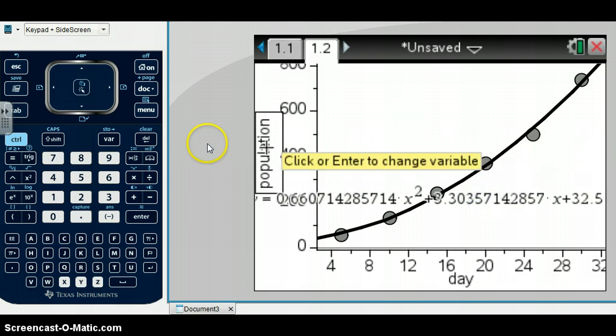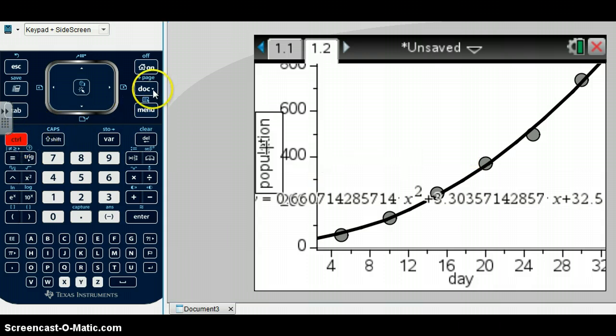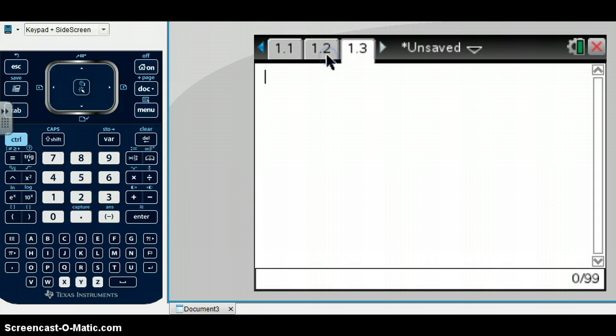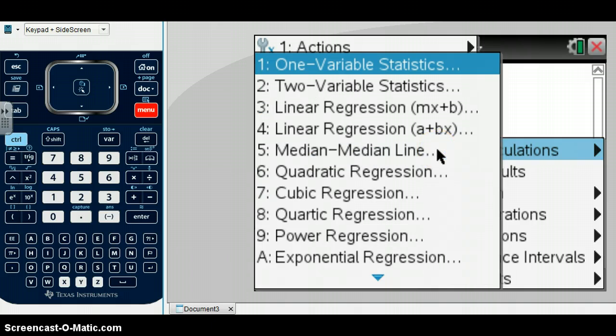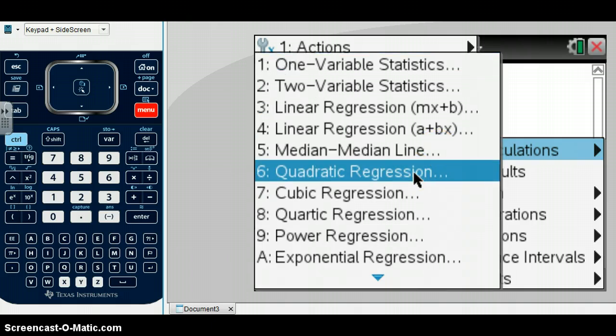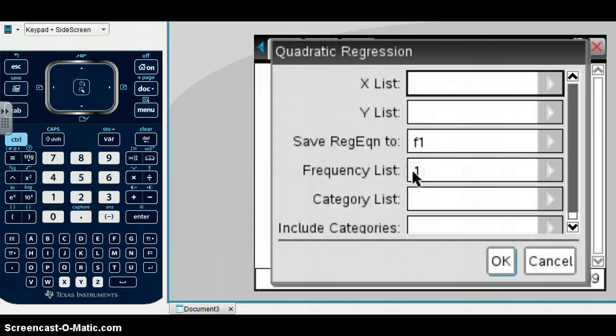One other way that we could get this is insert another new page, which would be a calculator page. And you can go over here to Menu, go to Statistics, Stat Calculations, and you see right here it says Quadratic Regression. Click on that.